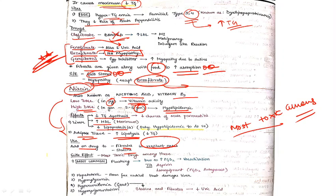The most common side effect of niacin is flushing, known as niacin-induced flushing, for which the drug of choice for treatment is aspirin. Other side effects include hepatotoxicity, hyperglycemia, hyperuricemia, and hyperpigmentation.